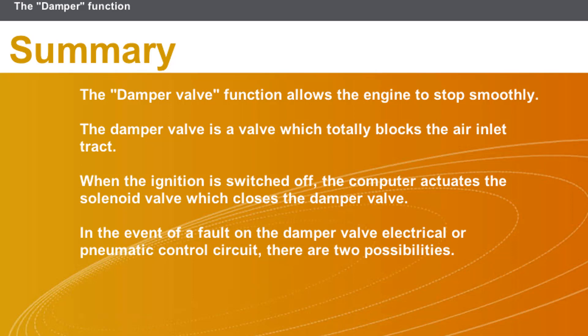The damper valve function allows the engine to stop smoothly. The damper valve is a valve which totally blocks the air inlet tract. When the ignition is switched off, the computer actuates the solenoid valve, which closes the damper valve. In the event of a fault on the damper valve electrical or pneumatic control circuit, there are two possibilities.